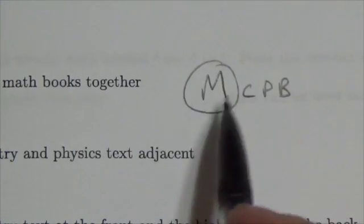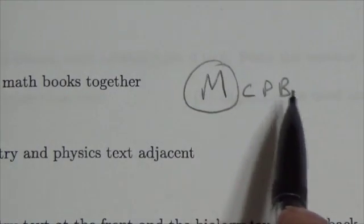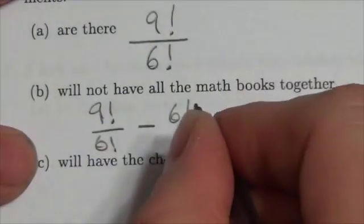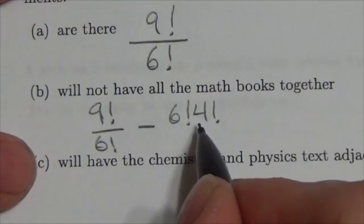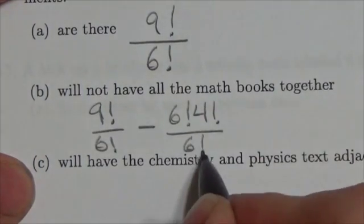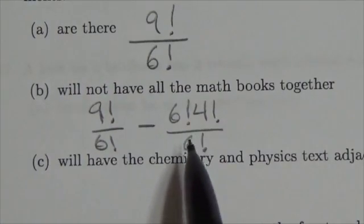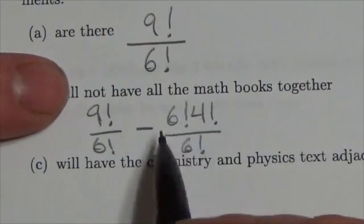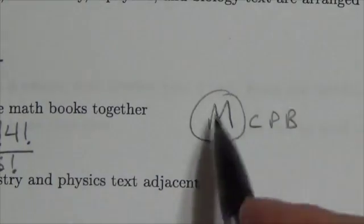Well, if we treat all of those six math books as one big math book, that leaves us with one, two, three, four objects to permute. Now, we would still divide by the six factorial because they are exactly the same. So really what happens here is these things will cancel, and it's really just like having four objects that we're permuting. You treat those things all as the same thing.